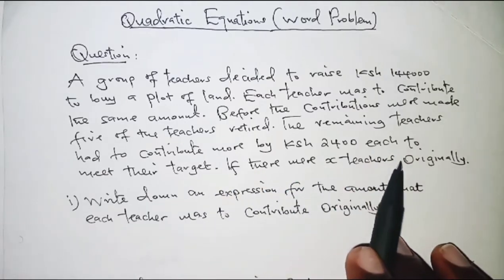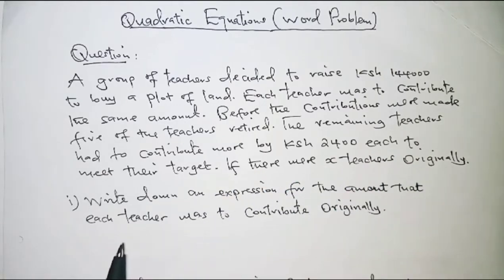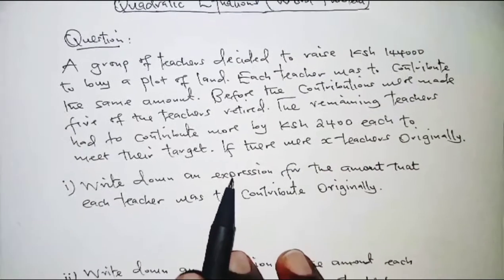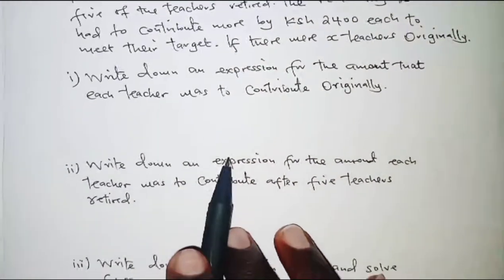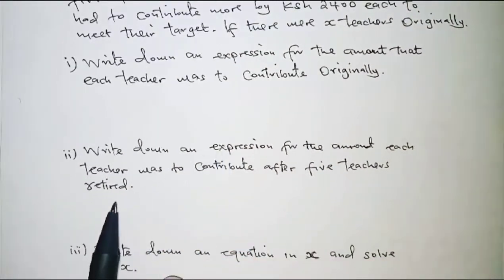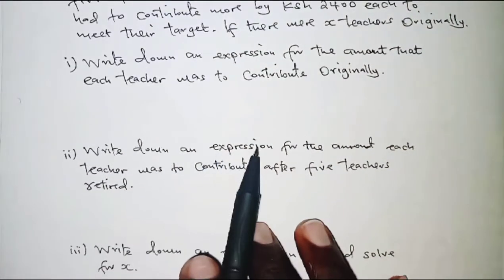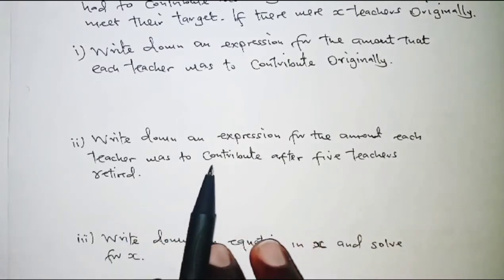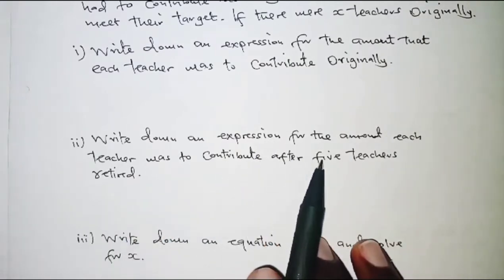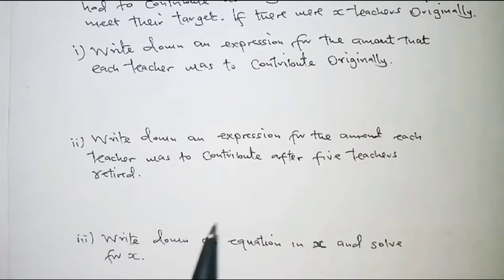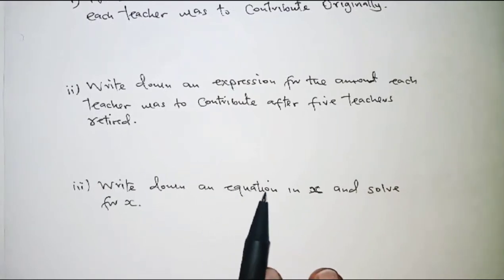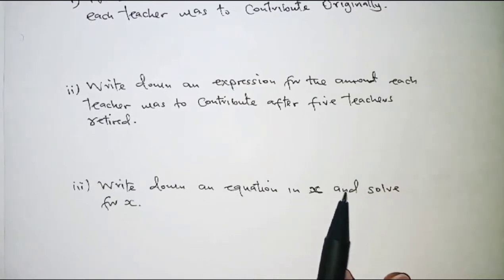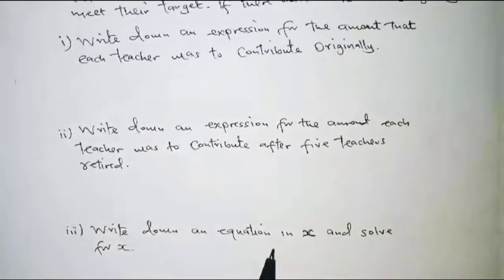The remaining teachers had to contribute more by 2,400 each to meet their target. If there were x teachers originally, write down an expression for the amount each teacher was to contribute originally, an expression for the amount after five teachers retired, and then write down an equation in x and solve for x.